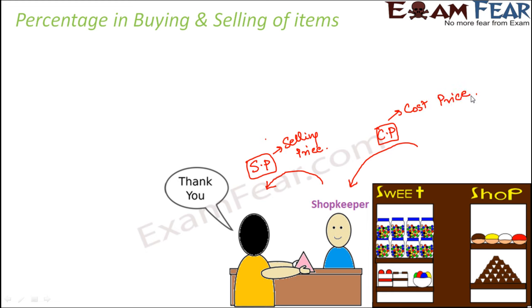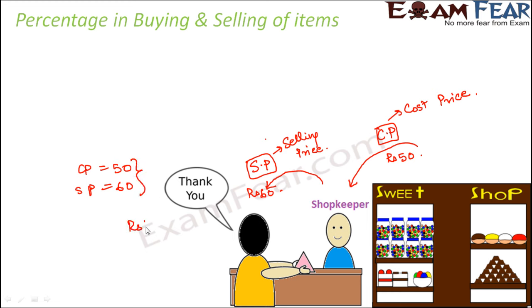For example, if we talk about that book, let's say the shopkeeper had purchased the book for rupees 50. So cost price is rupees 50. Now when he wants to sell the book, he is selling it for rupees 60. The shopkeeper has only paid rupees 50 for the book but is selling for rupees 60. So the difference, which is rupees 10, is nothing but the shopkeeper's gain.